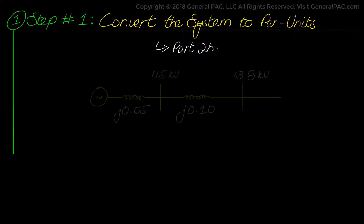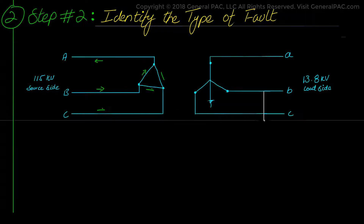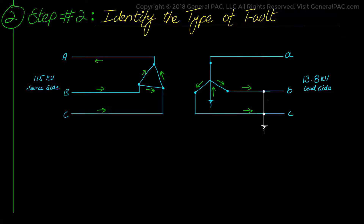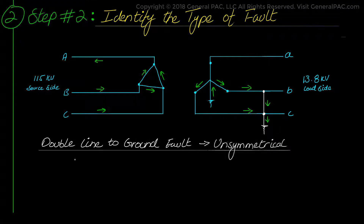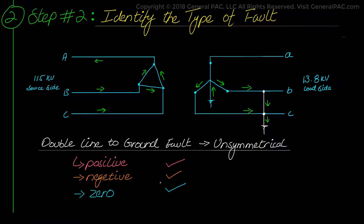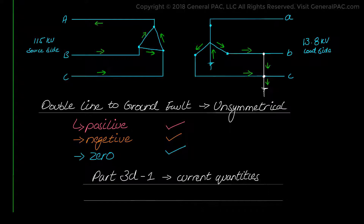Here we will draw the same network again. Step 2 asks us to identify the type of fault. By drawing a simple diagram with the transformer connections and the fault type, we can see how the current will flow for a two line to ground fault on phase B and C on the 13.8 kV system. A double line to ground fault is an unsymmetrical fault type, meaning an unbalanced fault, which will produce all sequence quantities — positive, negative, and zero sequence current and voltage quantities.